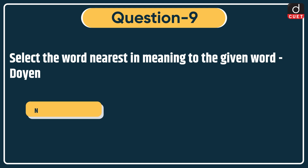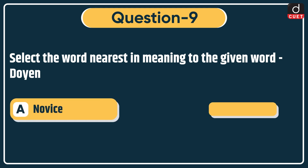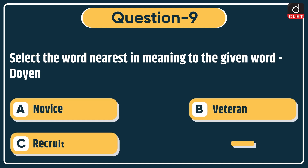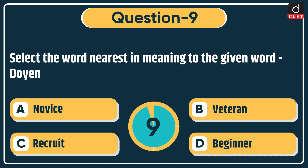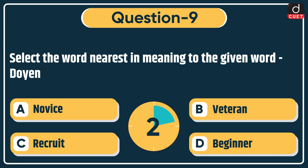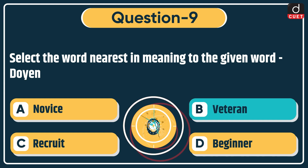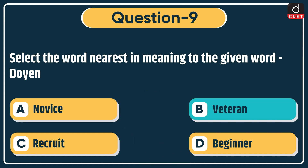Next question: select the word nearest in meaning to the given word — doyane. Options: now, vice, veteran, recruit, or beginner. The correct answer is option B, veteran.